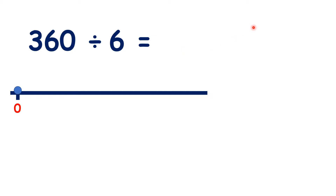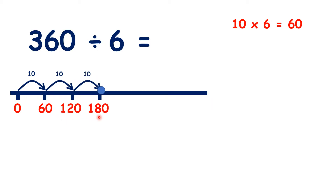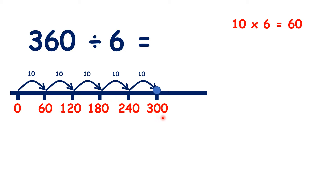But we do know that 10 times 6 is 60, so if we count up in steps of 10 times 6, we have 60, 120, 180, 240, 300, and 360.